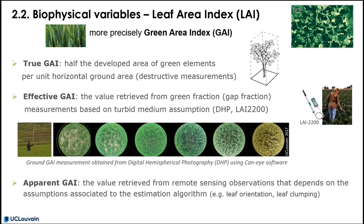The most popular biophysical variable is the Leaf Area Index, but this still needs to be clarified. Indeed, in remote sensing, we necessarily deal with the Green Area Index rather than the Leaf Area Index, because it includes not only the leaf, but also the stem and all the green elements of the plant.